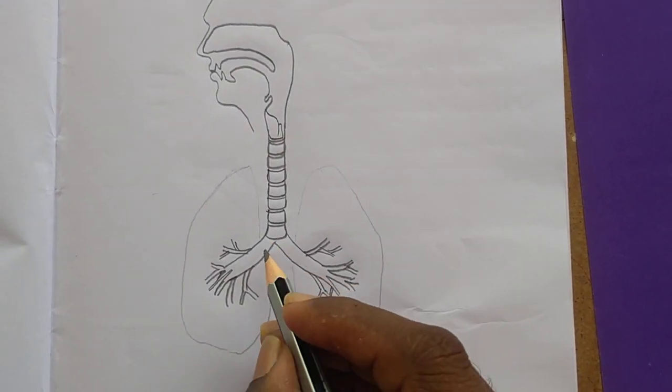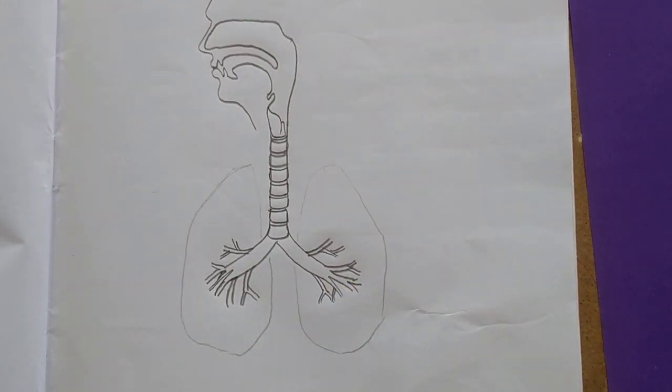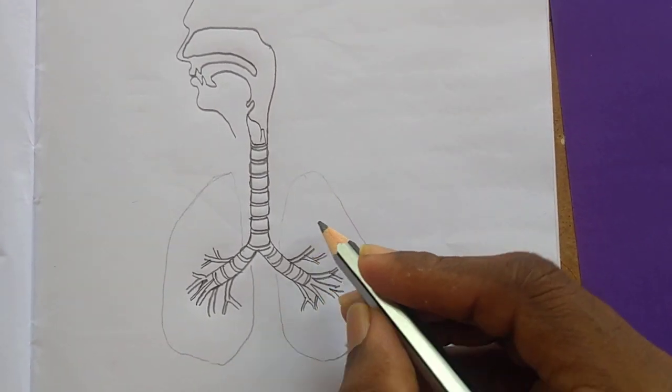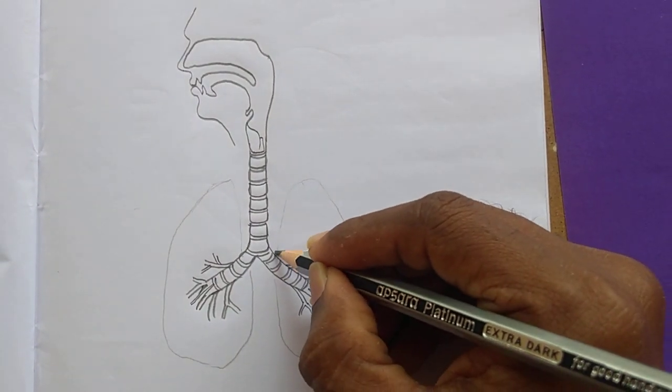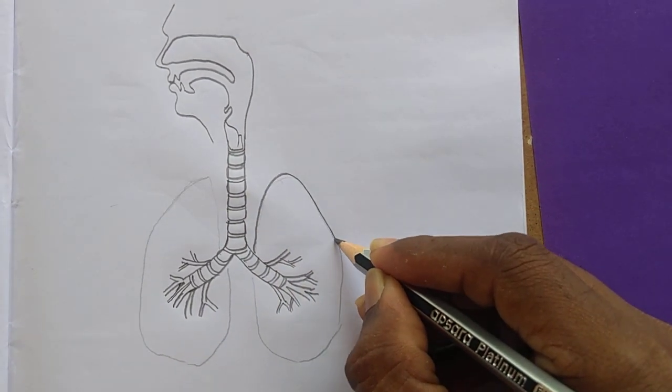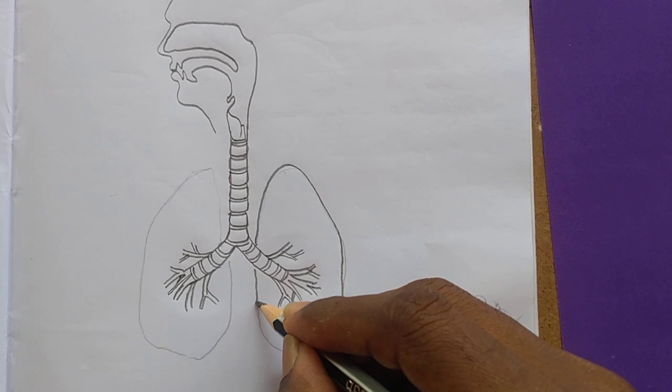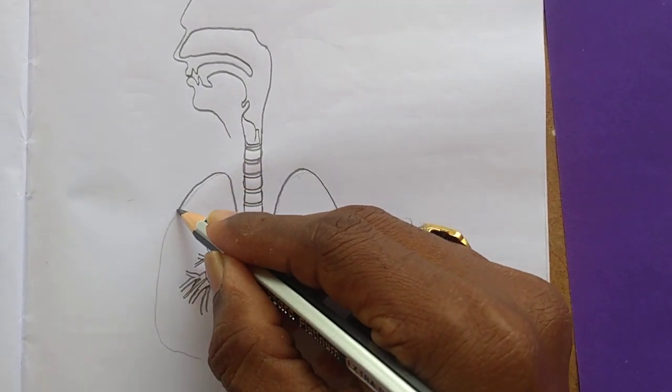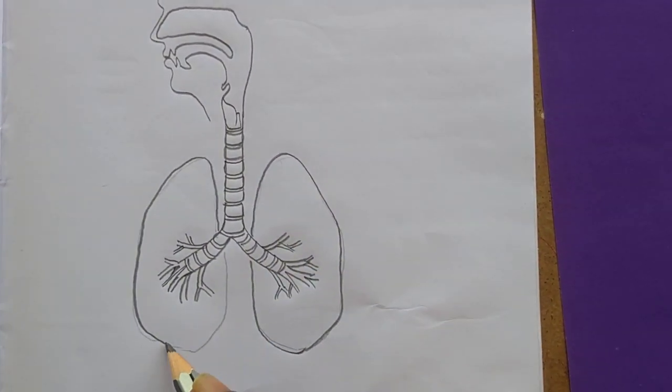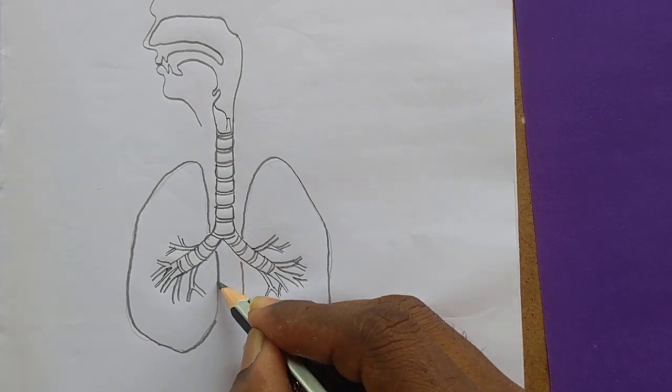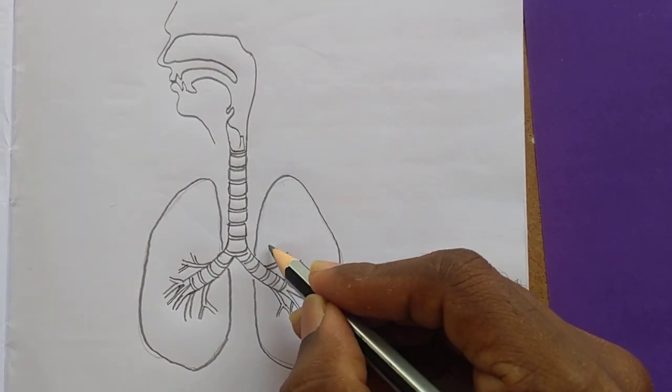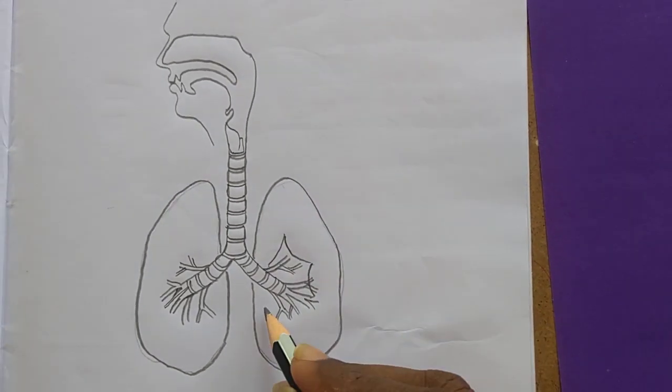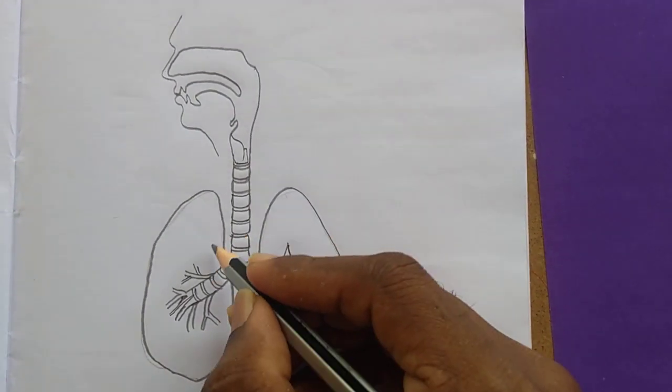After this, we have to draw that c-shaped rings here also like this. And after, we have to darken that outer line like this. And draw some loops like this.